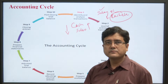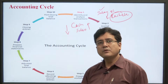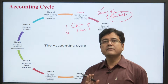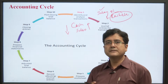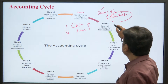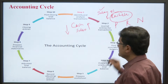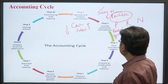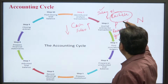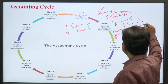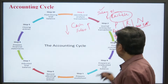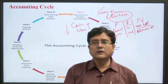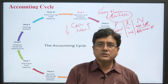The second step is the journal entry. Journal entry has three golden rules, which correspond to each account category. For personal account: debit the receiver, credit the giver. For real account: debit what comes in, credit what goes out. For nominal account: debit all expenses and credit all income. We categorize the three golden rules of journal entry and record the transaction accordingly.